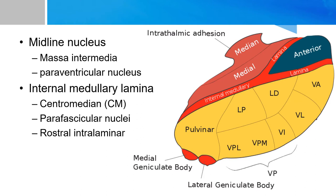In the same vicinity there is another nuclear group called the paraventricular nucleus of the thalamus. This is a little confusing because there is also a paraventricular nucleus of the hypothalamus — identical in name but in different locations. We will cover the hypothalamic one in the hypothalamus video.